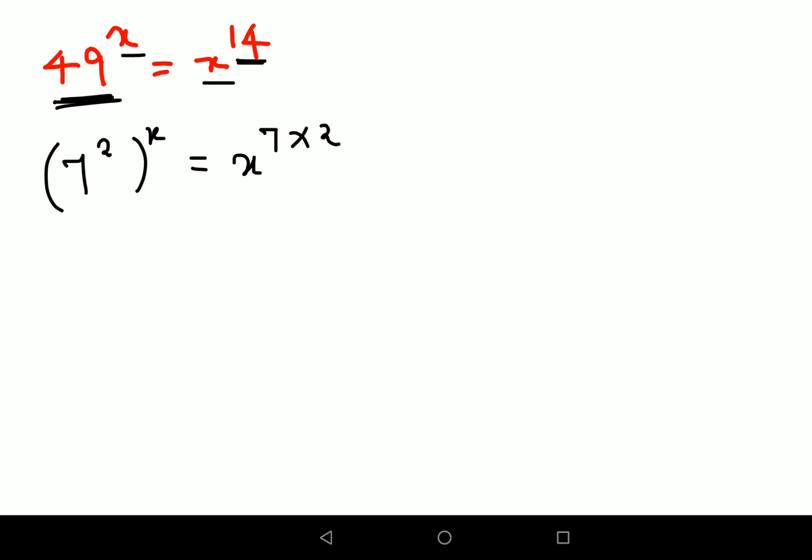Now your entire job becomes very easy. Let me just do one more step ahead. So here I can write this as nothing but 7 raised to 2x, and this can be written as x raised to 7 into 2. Now next step is very easy.